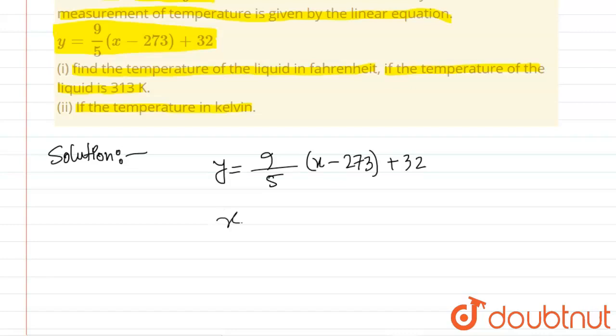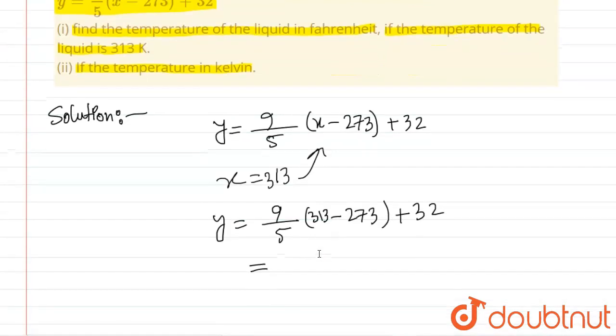So we will put the value in here: y equals 9 by 5, x minus 273, here's 313, and plus 32. So after solving this we get 104 degree Fahrenheit.